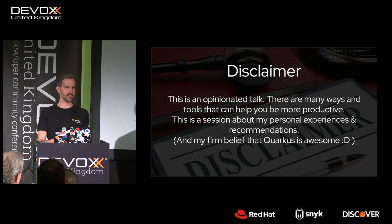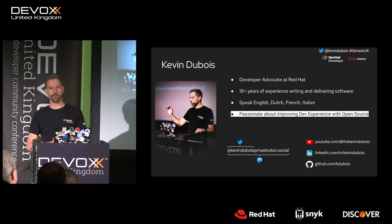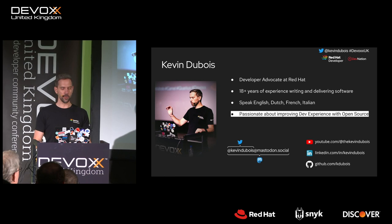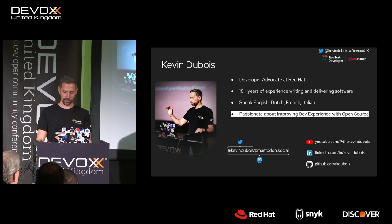Who am I? I'm Kevin Dubois, a developer advocate at Red Hat. I've been in the software industry for somewhere around 18 years, and my passion is really improving the developer experience with open source. Open source is something we do quite well at Red Hat — that's all we do. You can find me on Twitter and I'll post the slides there afterwards.